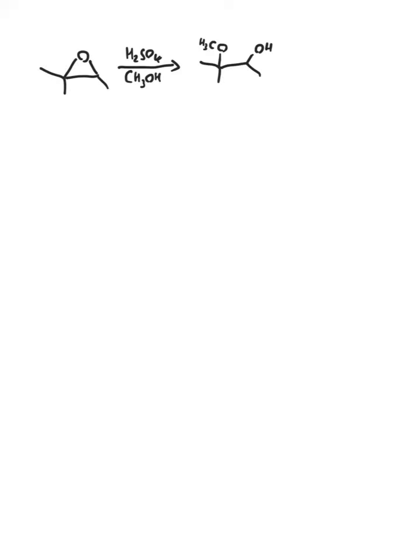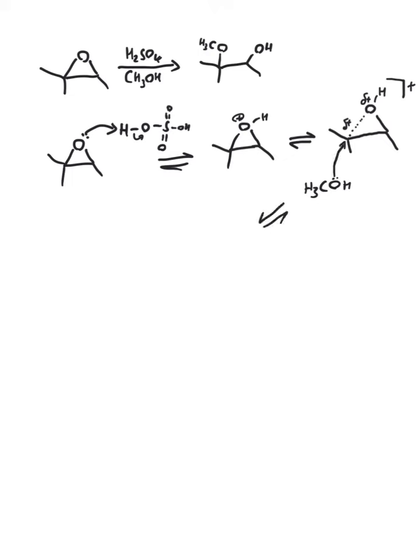If we mix the epoxide in strong sulfuric acid, the oxygen is going to get protonated, making this a much better leaving group. At this point we are going to see a somewhat SN1 reaction, but we only get attack from one face.